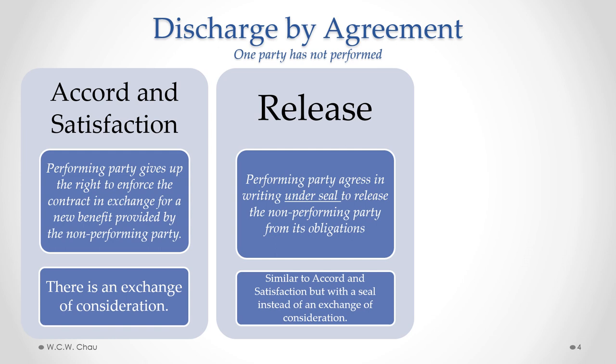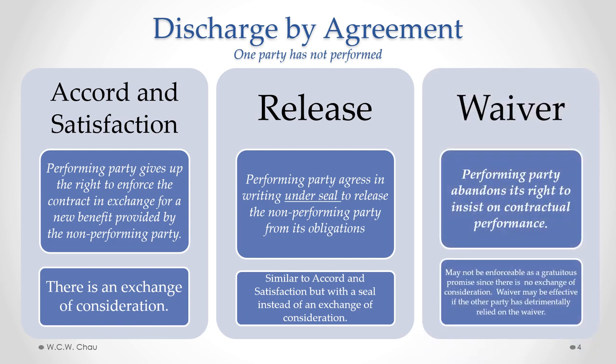Another type of discharge by agreement where one party has not performed is called a release. This involves a performing party agreeing in writing under seal to release the non-performing party from its obligations. This is similar to accord and satisfaction, but instead of an exchange of consideration, a seal is used in place of consideration in order to have an enforceable agreement to release the non-performing party.